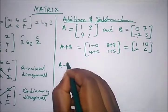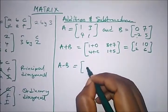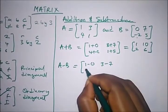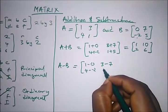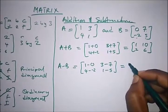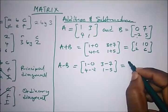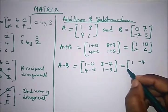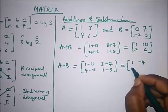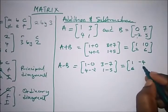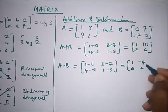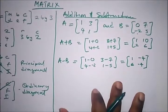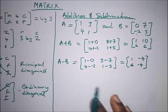For A minus B, the same method applies: 1−0, 3−7, 4−(−2), and 1−5. That gives us 1, −4, 4−(−2) which is 4+2 = 6, and 1−5 = −4. So the result is [1 −4 / 6 −4].